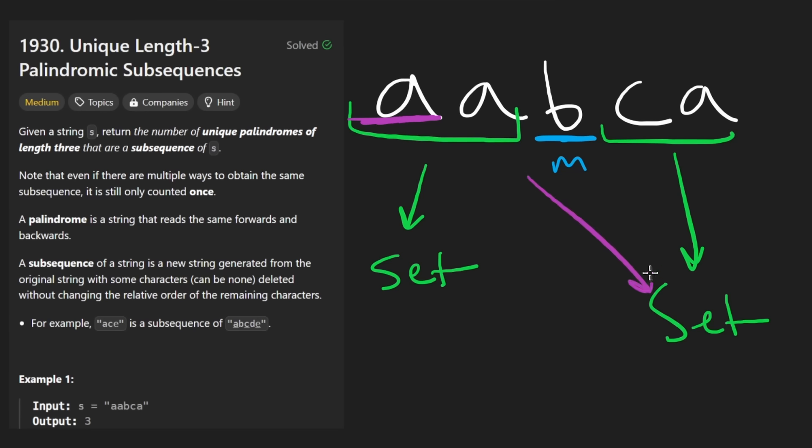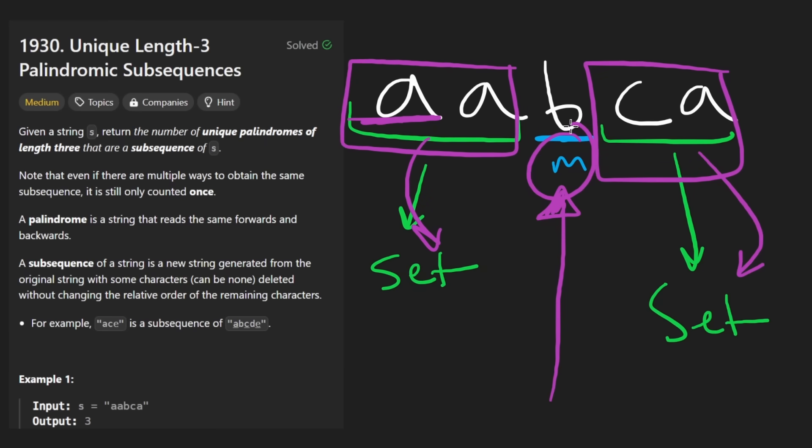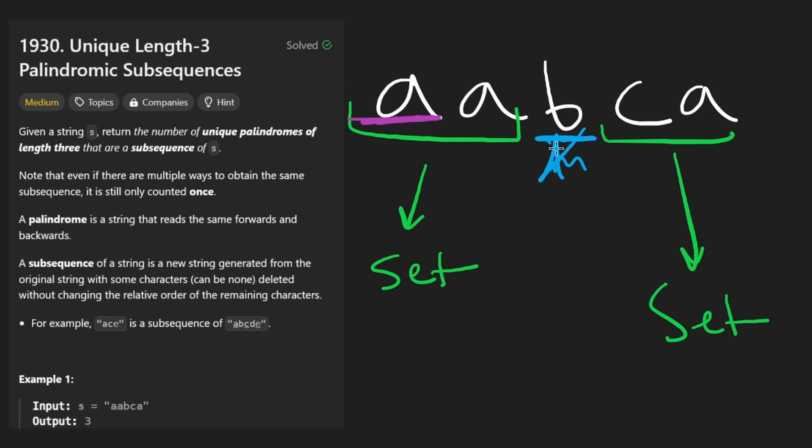And so we have an A here. And then I'd say, OK, let's do a quick lookup, a constant time lookup to see if we also have that same character in the right side. And that would allow me to count the palindrome. So that's the N squared way.